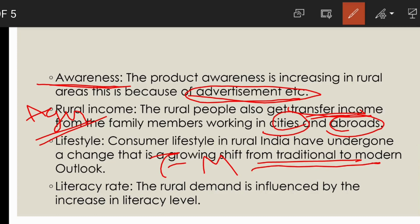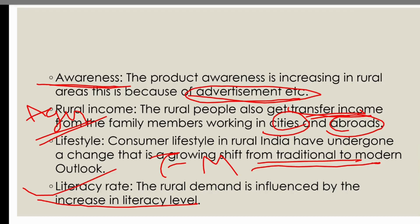The last feature is literacy level. Rural demand is influenced by the increase in literacy level. As literacy rates keep rising, people become more aware of products. Increasing literacy rates can also solve problems related to marketing communication — if our communication is good, we can effectively inform people about products. So literacy rate is also increasing, which is a positive feature of rural markets.